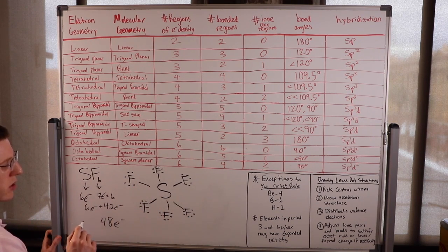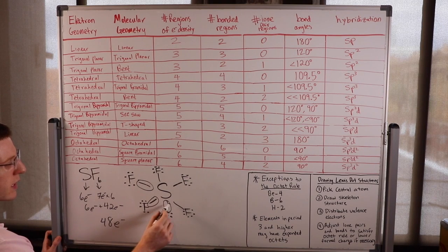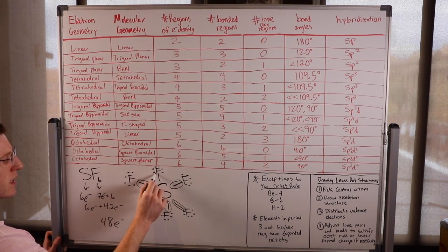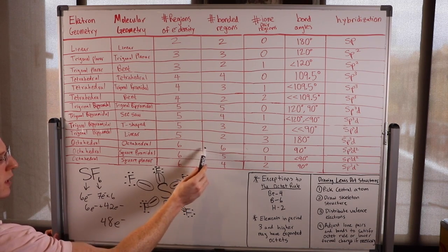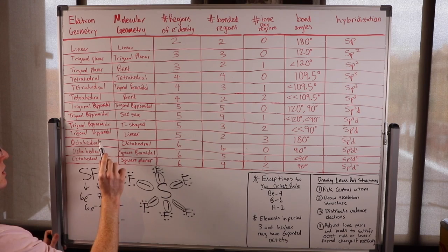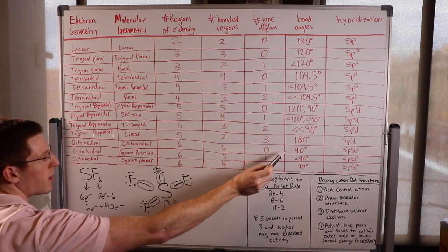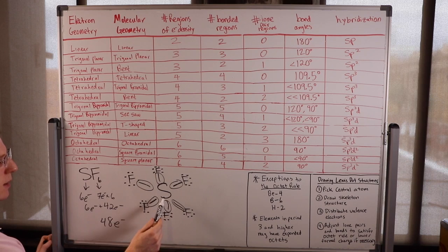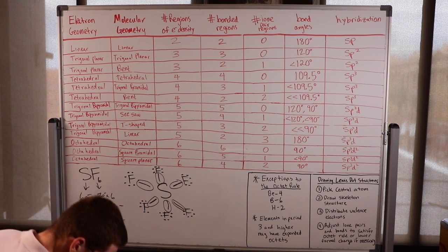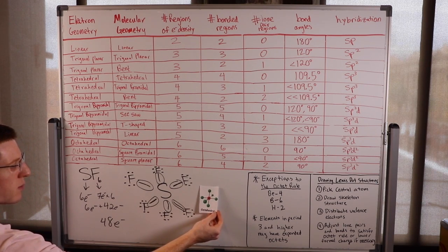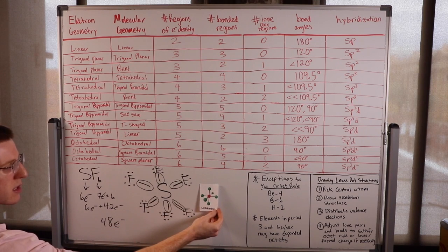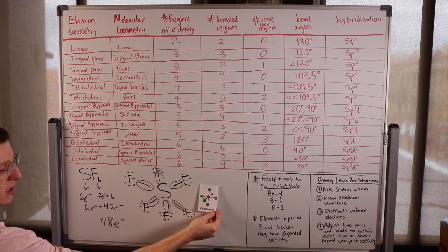This is a completed Lewis dot structure. We have six regions of electron density, all bonded regions. This is an octahedral shape with octahedral electron geometry. All the bond angles are 90 degrees and the hybridization of the sulfur is SP3D2. The red circle is the sulfur and the green circles are all the fluorines.